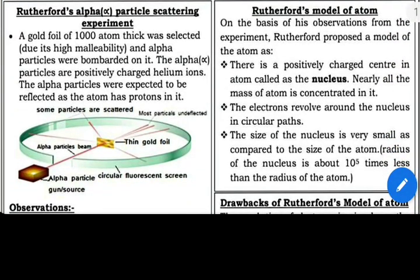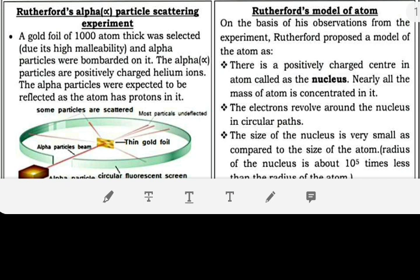Rutherford's Alpha Particle Scattering Experiment. A gold foil of 1000 atom thick was selected due to its high malleability. Gold is very malleable, so thin sheets can be made from it.